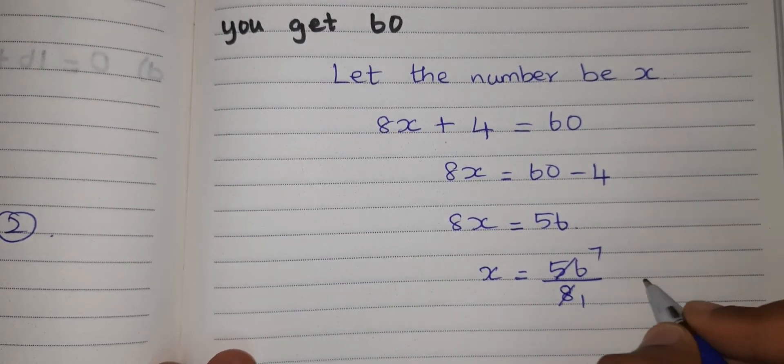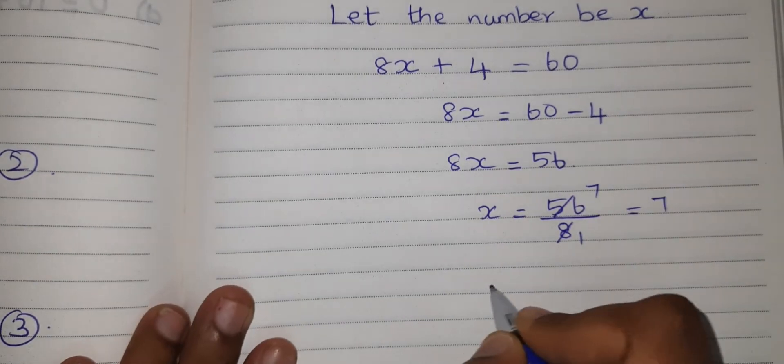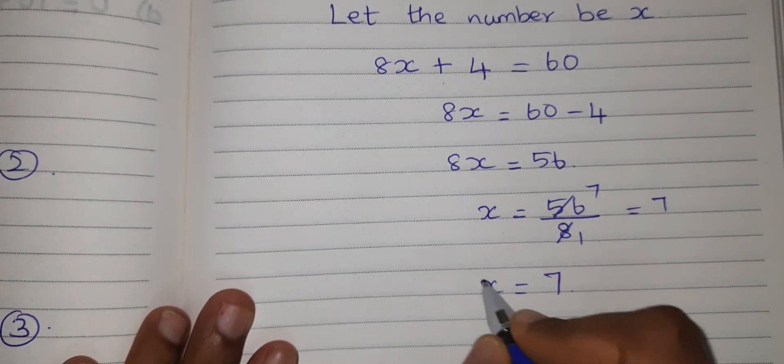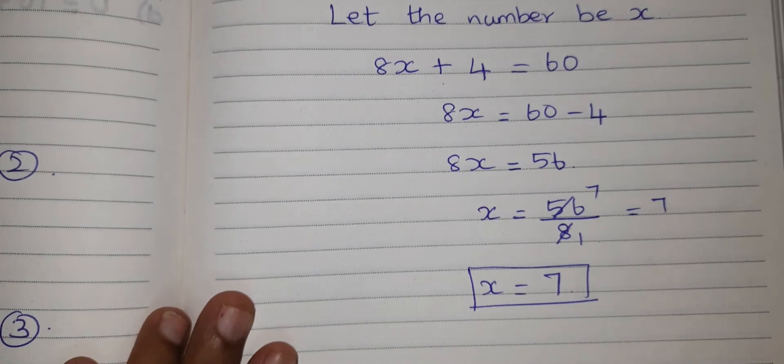So that is 8, 7 eighths of 56. So what is the X value? X equal to 7. This is the answer.